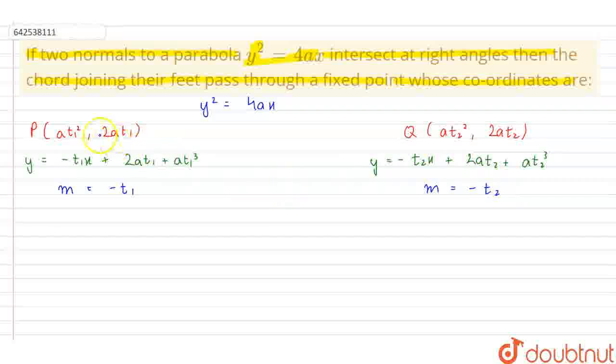Since both these normals are perpendicular to each other, therefore we can say that minus t1 into minus t2 must be equal to minus 1. So from here we get t1 into t2 equals minus 1.